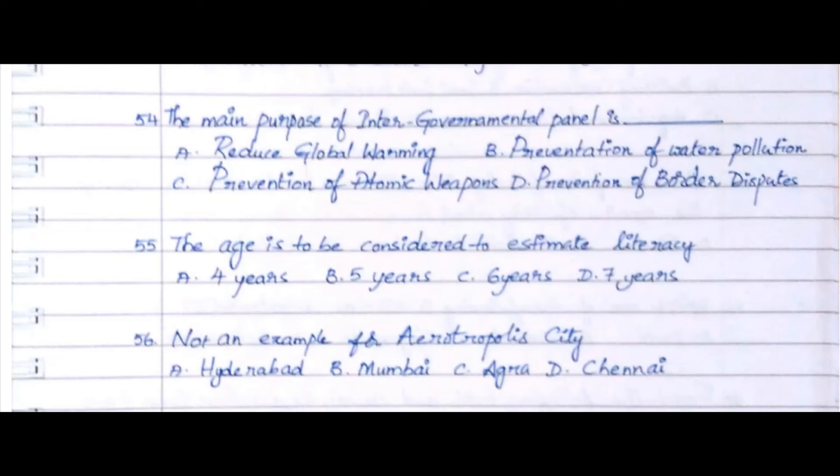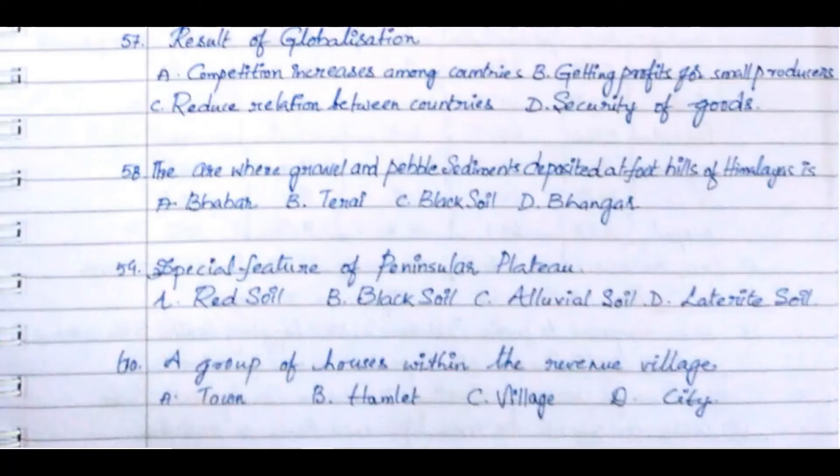Question 56: Not an example of an Aerotropolis city. Option A. Hyderabad, Option B. Mumbai, Option C. Agra, Option D. Chennai. The answer is Option C. Agra.